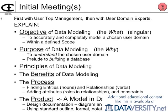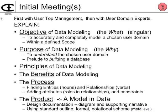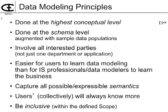Why do we do that? So we can understand the domain. We ultimately ask users to validate this model, and you can't validate something unless you understand it — and it's our responsibility to ensure that they understand it. What are the principles of data modeling? The benefits, the process, and the product would be a model of data. To call it a data model is interesting because it's really a user world model in data.